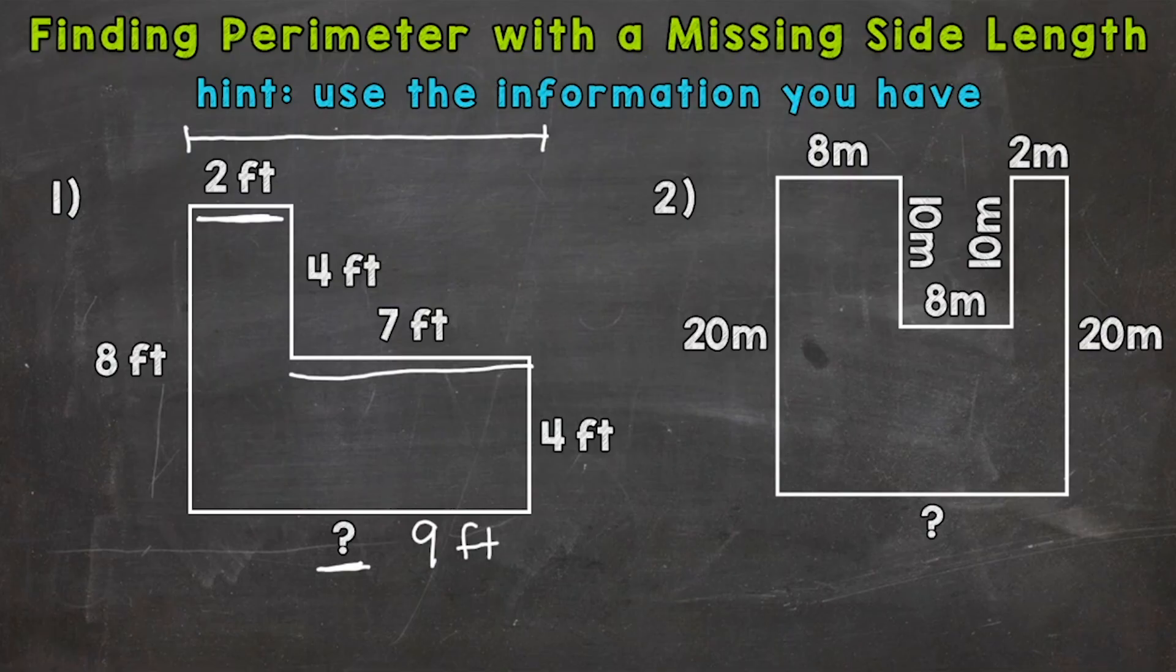Now we have all the information we need in order to calculate perimeter. So let's add up all of the sides. And I'm going to start with the two feet up top. So two feet and I cross it off. That way I don't count anything twice or forget to add any of the sides.